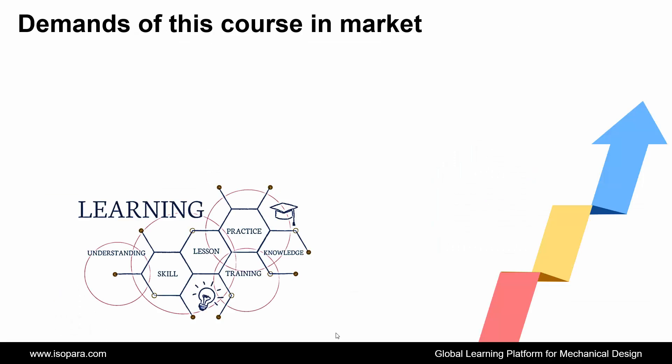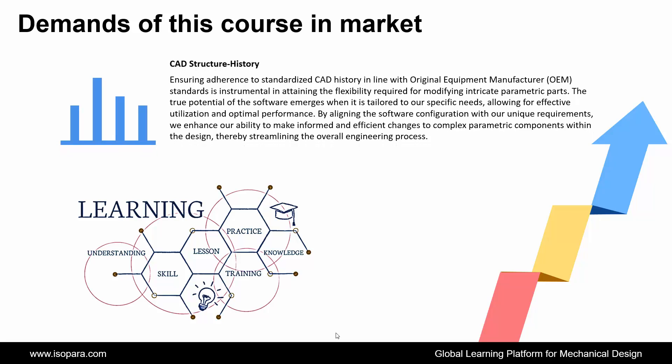First, we see the demands of this course in the market. If we talk about the CAD structure history, ensuring adherence to standardized CAD history in line with OEM standards is instrumental in attaining the flexibility required for modifying intricate parametric parts. The true potential of the software emerges when it is tailored to our specific needs, allowing for effective utilization and optimal performance. By aligning the software configuration with our unique requirements, we enhance our ability to make informed and efficient changes to complex parametric components, thereby streamlining the overall engineering process.